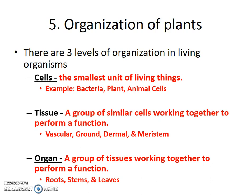Plants' tissues are called vascular, ground, dermal, and meristem. Together in the stem part of a plant they make up the stem. And vascular, ground, dermal, and meristem tissue crammed together in the broad parts of a plant above the ground makes up the leaves. That vascular, ground, dermal, and meristem tissue is made out of plant cells.